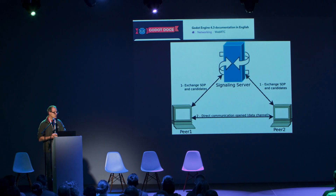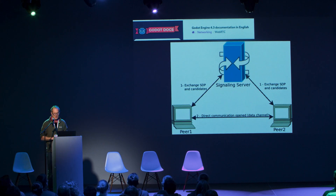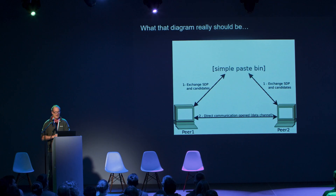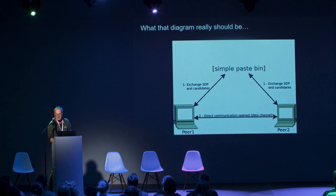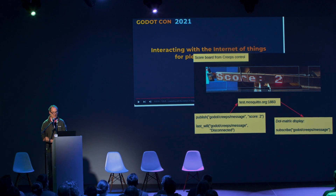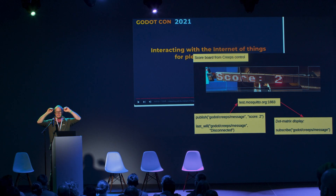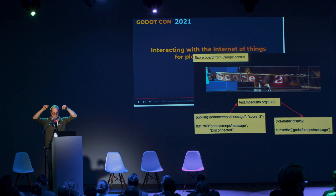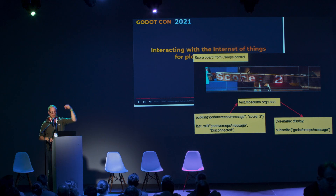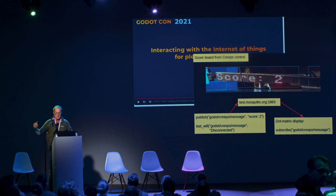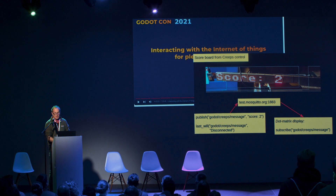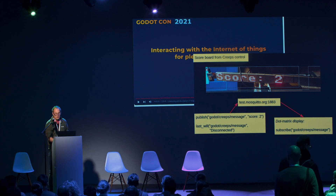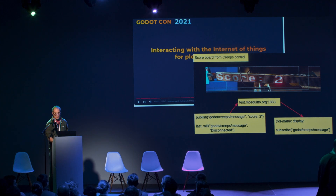The signaling server shows up in the Godot documentation looking like a huge supercomputer, which is very misleading, because really it's just a simple paste bin — one computer posts little bits of text that the other computer can get. A few years ago at another talk I used exactly this: an MQTT broker, which is an Internet of Things device. You'd publish your score up to it and a dot-matrix display on the wall would download it. There are lots of free versions of these around, so you don't need your own. Test.mosquitto.org is a very common reference one.